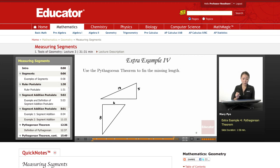Okay, the last example, we're going to use the Pythagorean theorem to find the missing length.